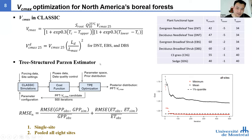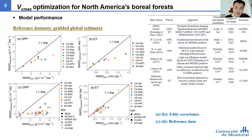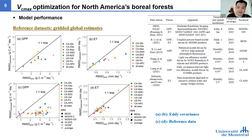The optimized parameters definitely improve model performance. We also use reference data from global estimates to evaluate model performance. For the GPP, the optimization method improves GPP across all sites and datasets. However, the model faces a challenge for evapotranspiration. In permafrost-free sites with a closed tree canopy, evapotranspiration is easier to improve, but in the permafrost region, evapotranspiration improvement is more difficult.